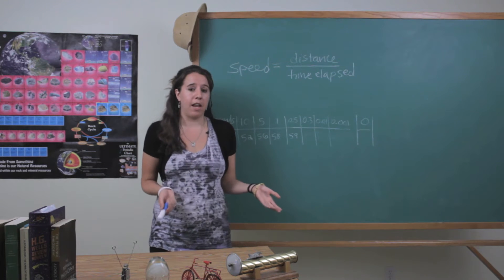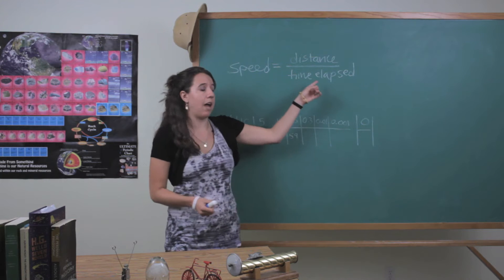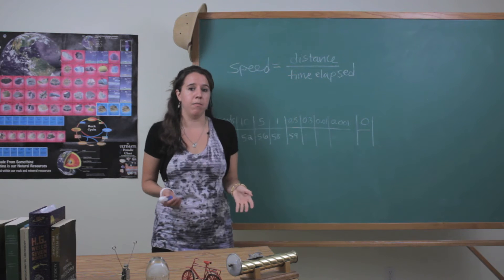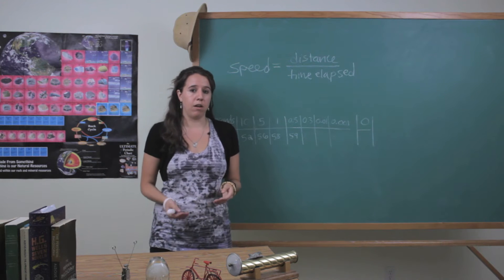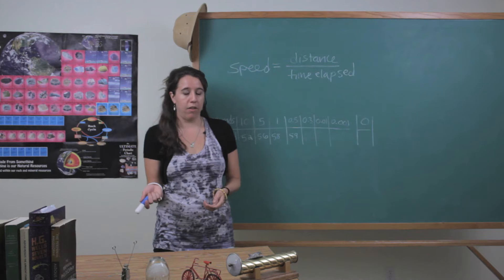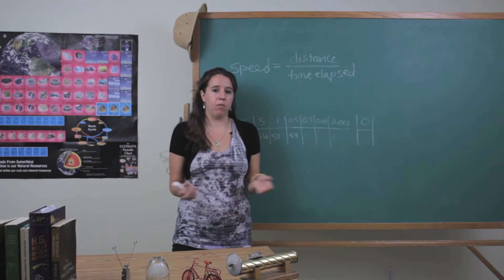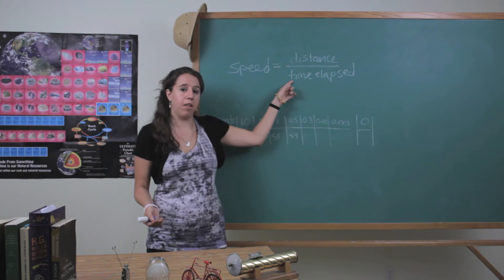And when we talk about that hour, that's a time elapsed. That's not a single time. So if we say that we traveled 60 miles between 3 o'clock and 4 o'clock, well we just subtract the time that we got there and the time that we left and we get one hour and that is our time elapsed.